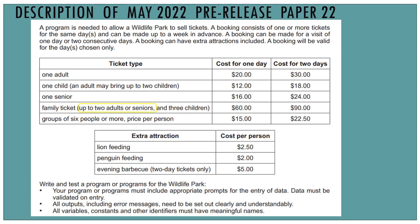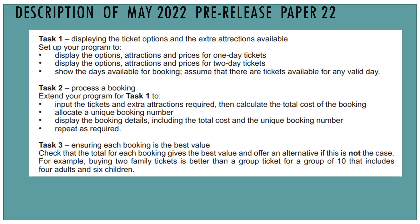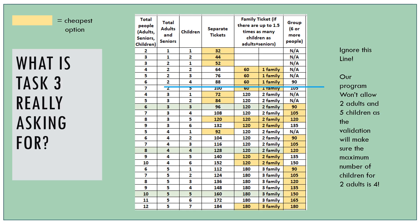Here's the pre-release material and those are the tasks. We need to calculate the cost if you are purchasing tickets separately, if you're purchasing the tickets as a family, or if you're purchasing the tickets as a group, and then find the cheapest option.